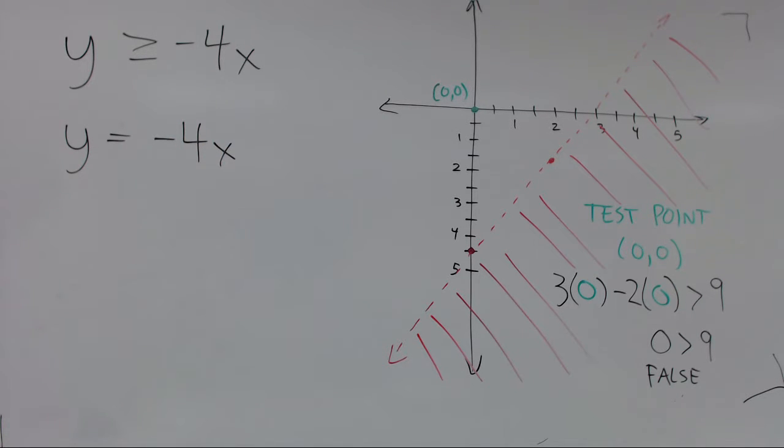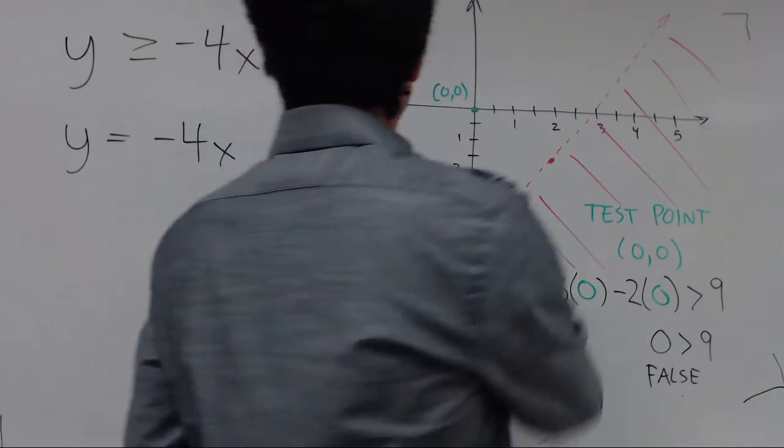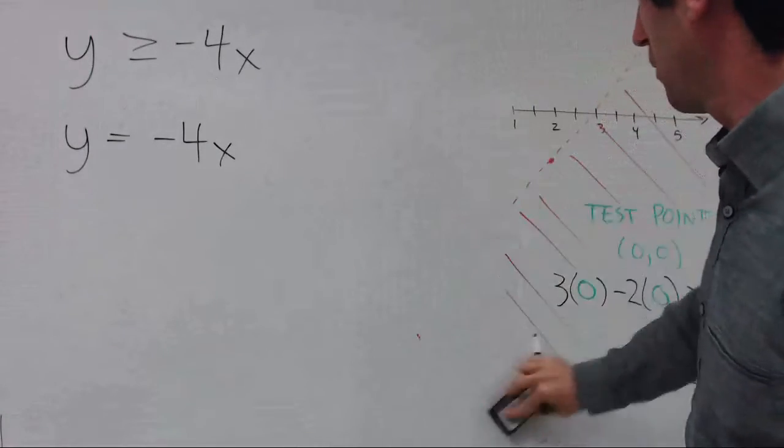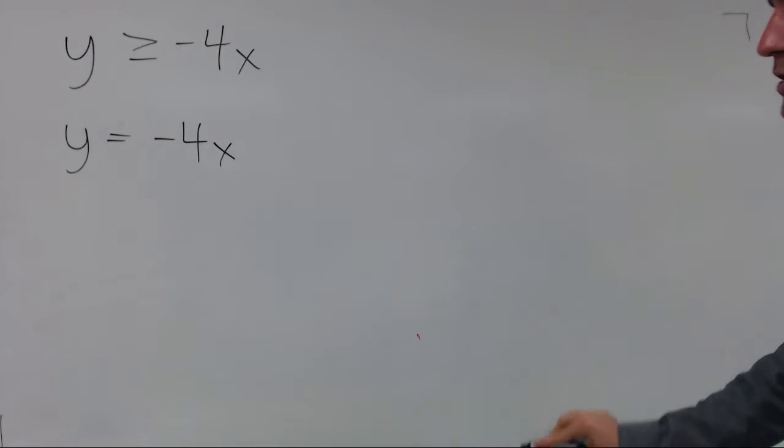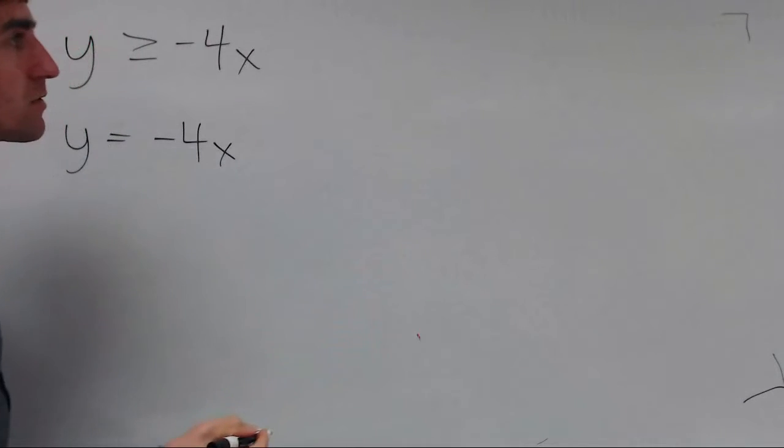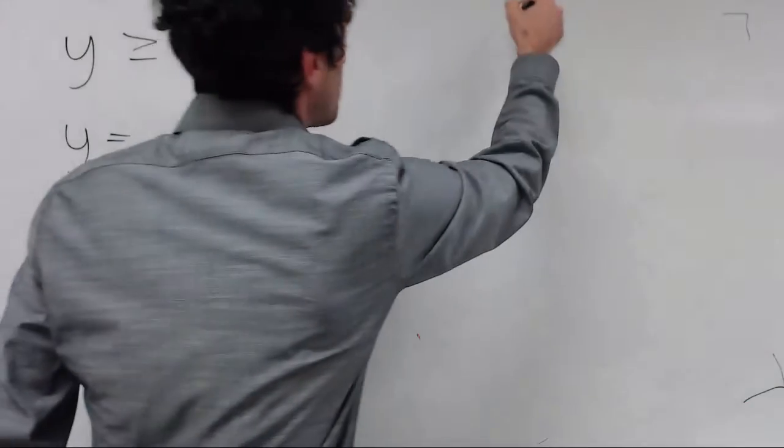This one's already in slope-intercept form. The slope is negative 4 and the y-intercept is zero. Start at the origin and it'll go down and to the right. So again, looking at quadrant 4, but we can center this one a little more.